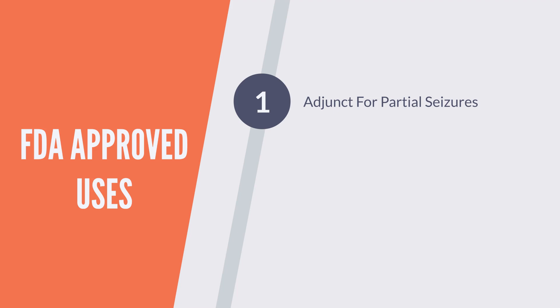The second FDA-approved use is in the treatment of post-herpetic neuralgia. This is a condition where there is a lot of pain due to damaged nerves, which results as a complication of shingles. Sometimes when somebody gets shingles the rashes disappear, but there's been some damage to the nerves that causes pain, and gabapentin is used to manage that kind of pain.